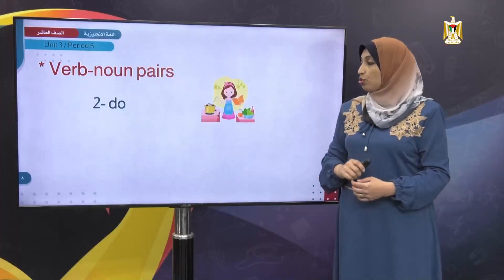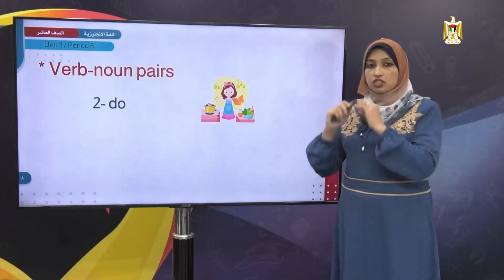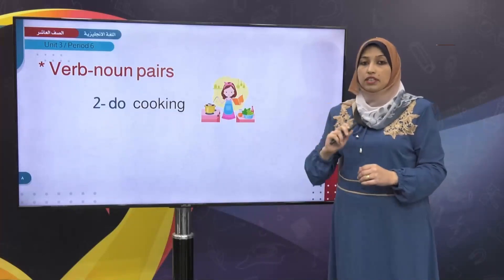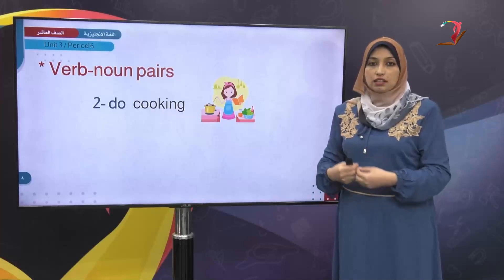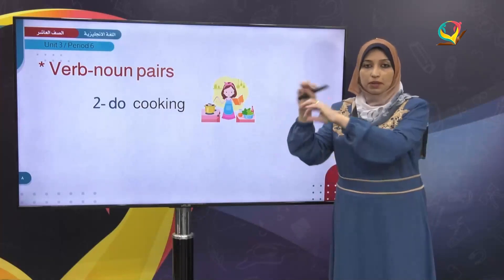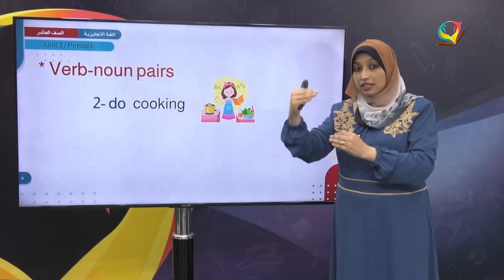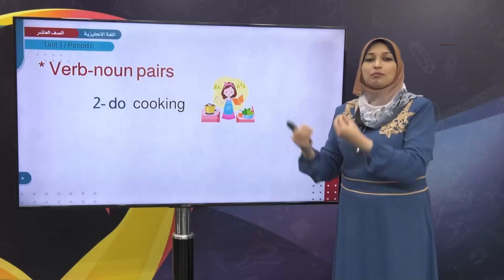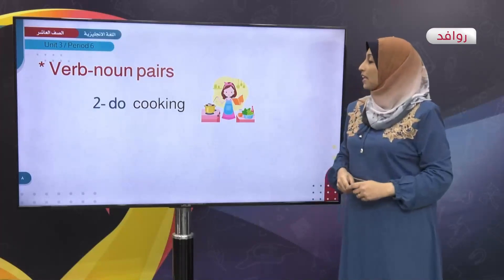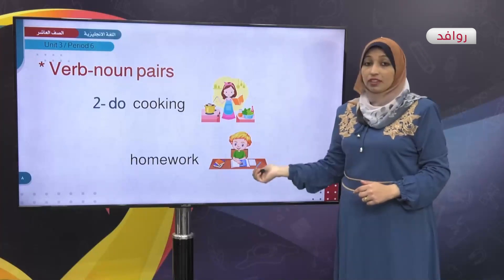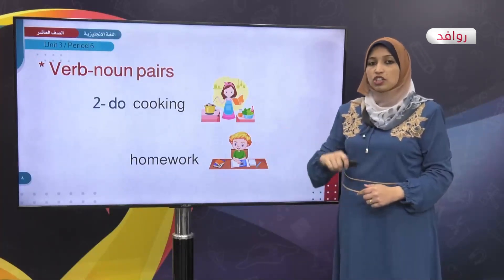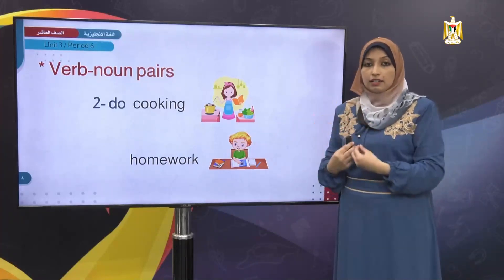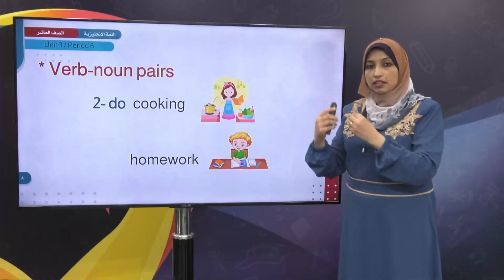Next we have the word 'do,' which means to perform. Here we use it with things that require order and steps. For example, 'do cooking' — performing cooking, which requires organizing things step by step. Also 'do homework' — performing homework. Homework requires steps to solve, whether it's math or English.